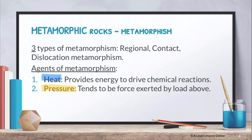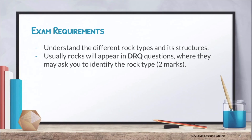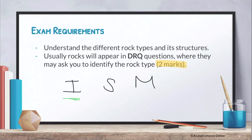For exam requirements on rocks, it's actually extremely simple. Questions usually come out as two-mark questions asking you to identify a rock type based on its structure or material. To distinguish them, look at the structure: if rocks are on the surface, they are likely igneous. Then identify if they are very large — which could be granite — or very small — which could be basalt.